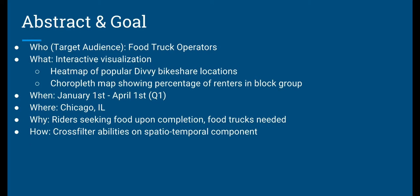Bike share services are essentially a citywide bike rental service with stations located throughout the city where citizens can check out and drop off bikes. With this information in mind, we developed an interactive map-based geovisualization application capable of displaying multiple variables in a spatiotemporal context with respect to Chicago's bike share data.